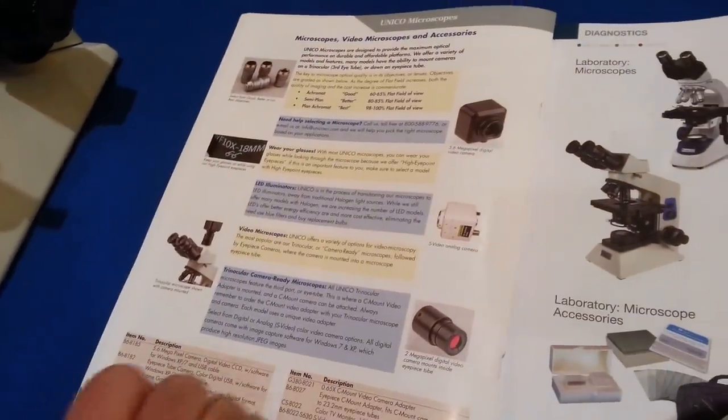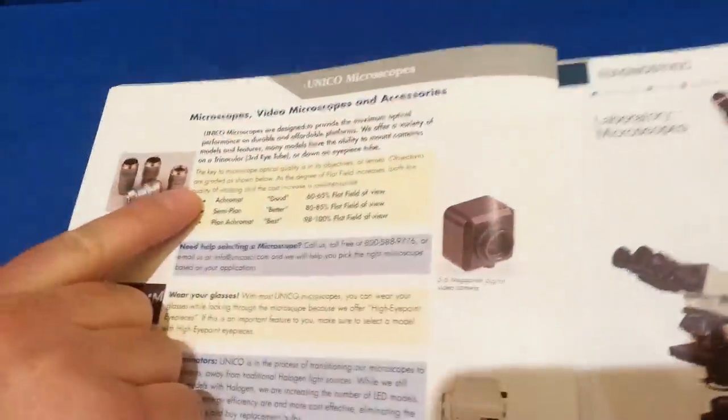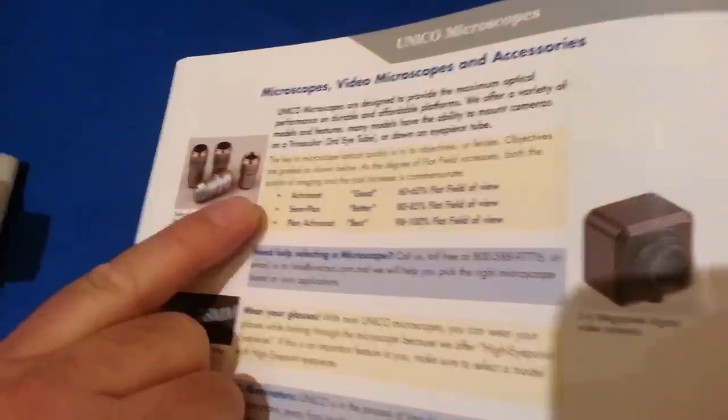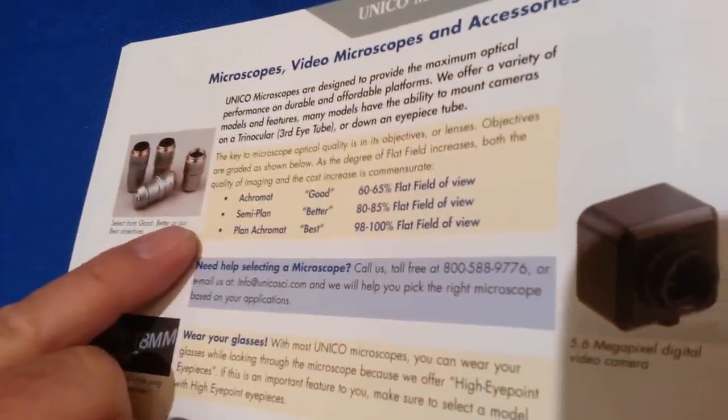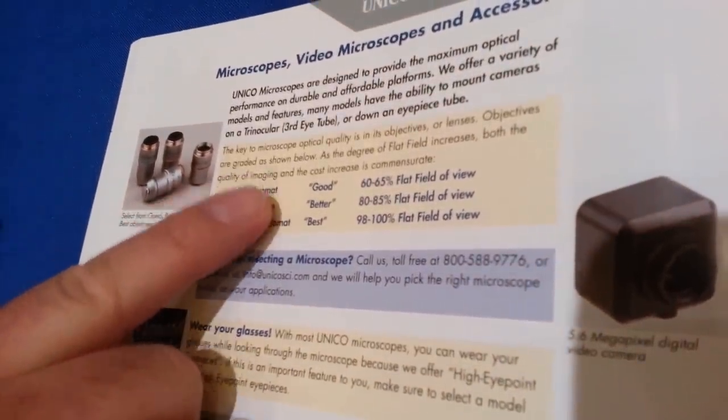Basically it boils down to what type of objective lenses they have. And if we look here we'll see Acromat, semi-plan, and plan Acromat. And you can see that it's listed as good, better, best.